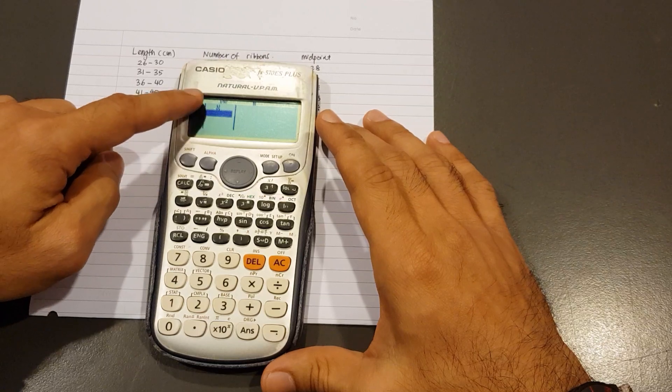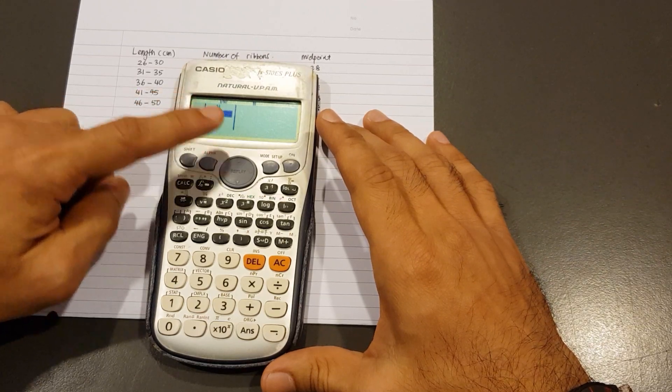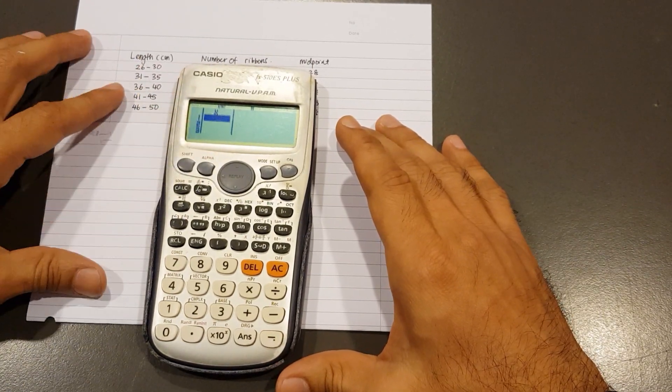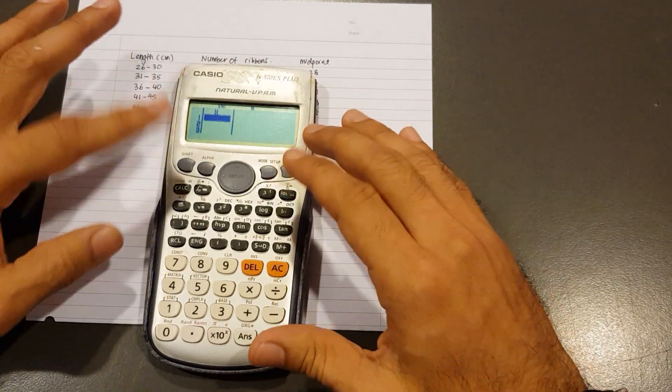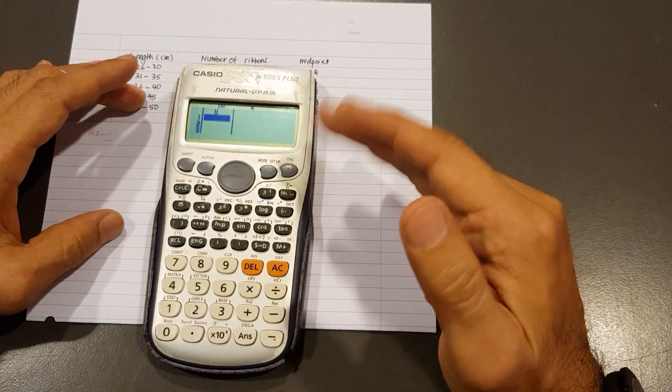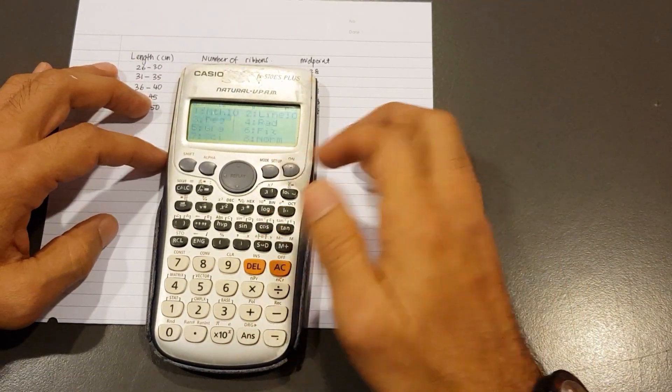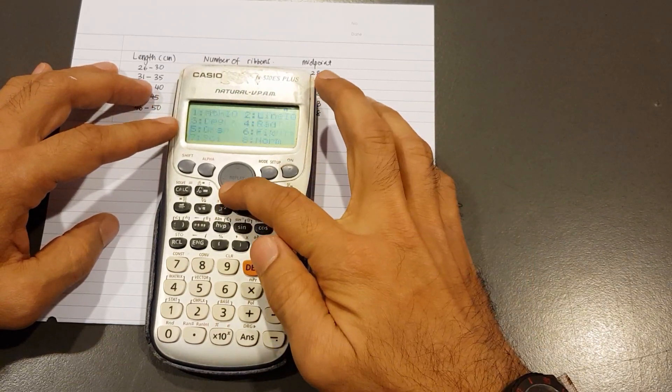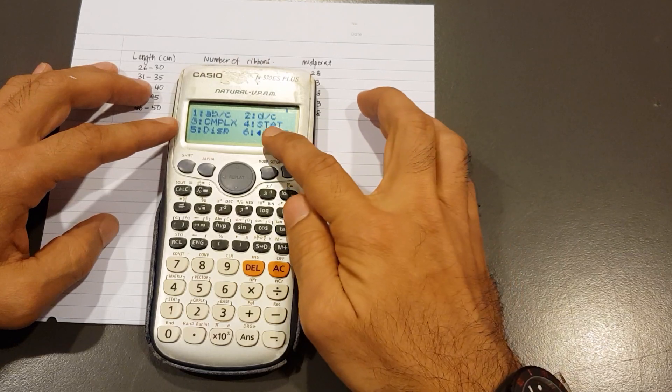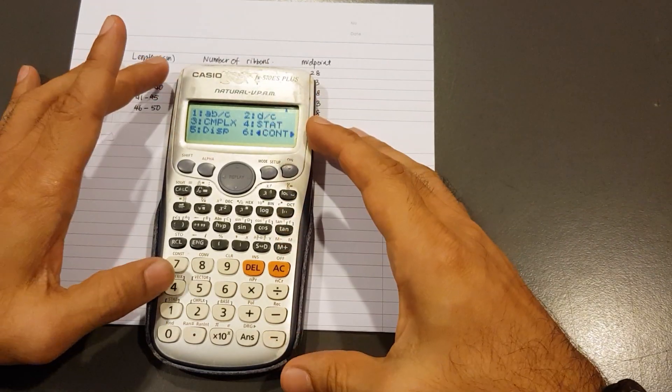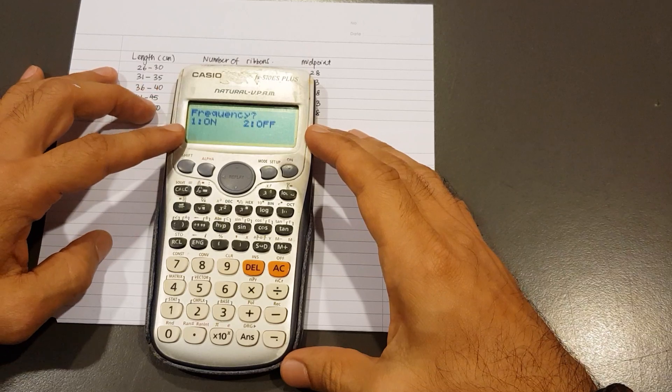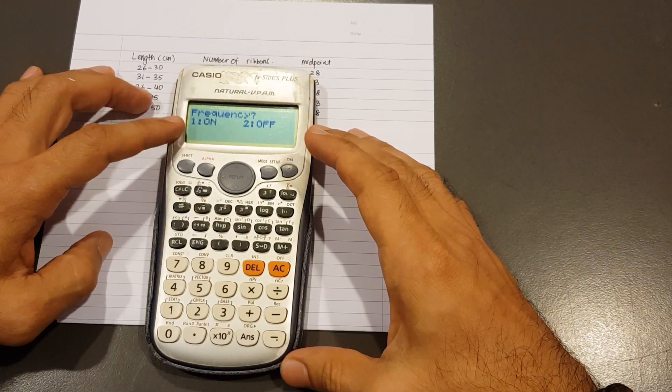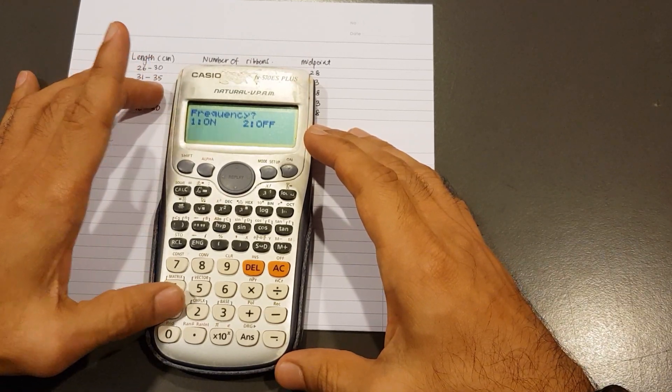Look at number 2 - that's Data. Tap number 2. We have a table or column, but it's only for X. It won't work because we need X and also frequency. To bring out the frequency column, press Shift Mode. We have to go down, so press the down arrow. Number 4 is Stat. And it asks us frequency - yes, we want it turned on. Frequency On, that's number 1.